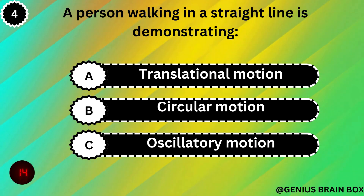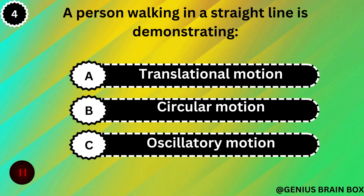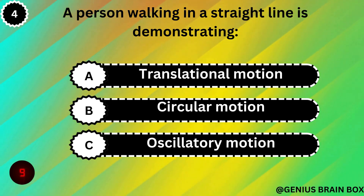A person walking in a straight line is demonstrating: translational motion, circular motion, or oscillatory motion.